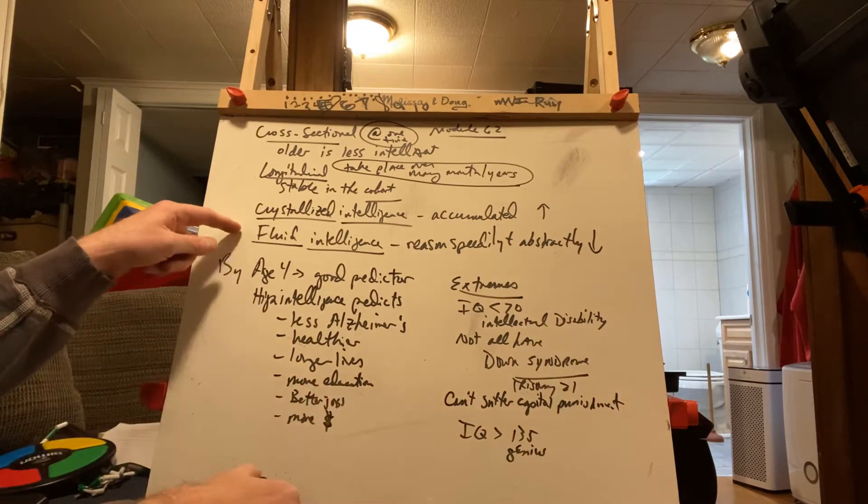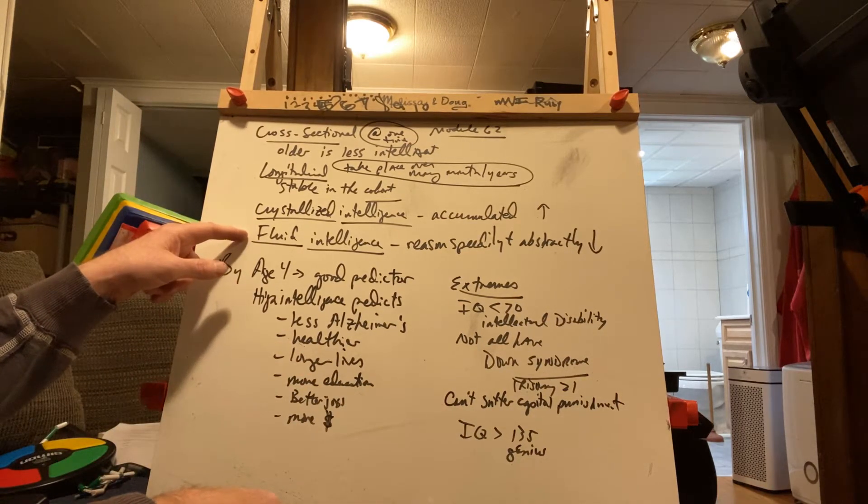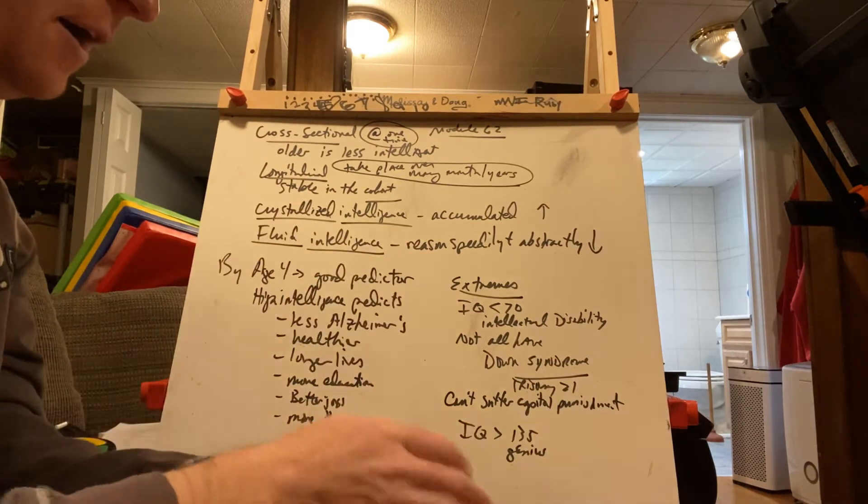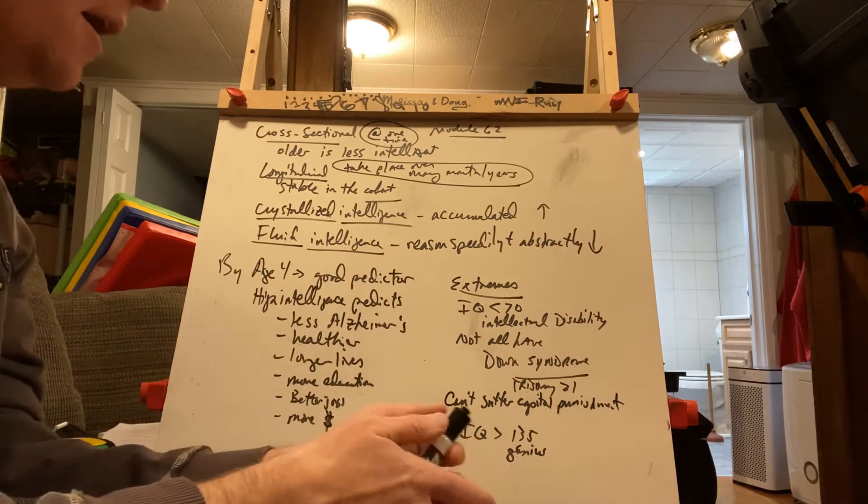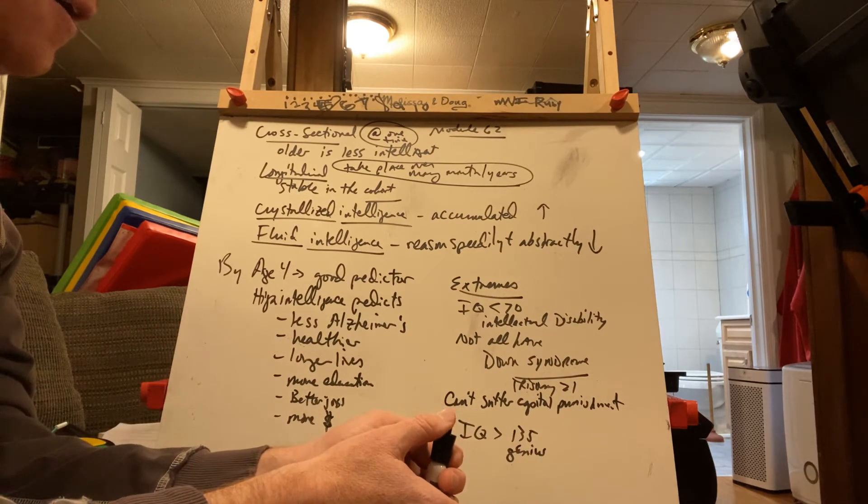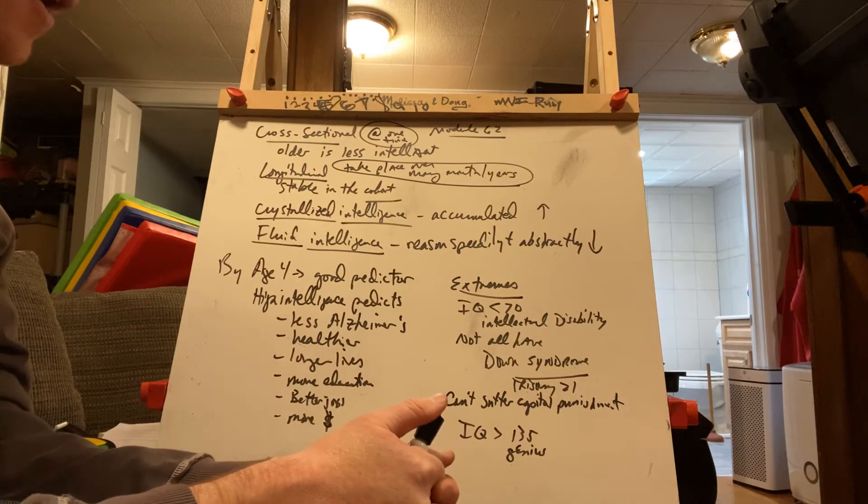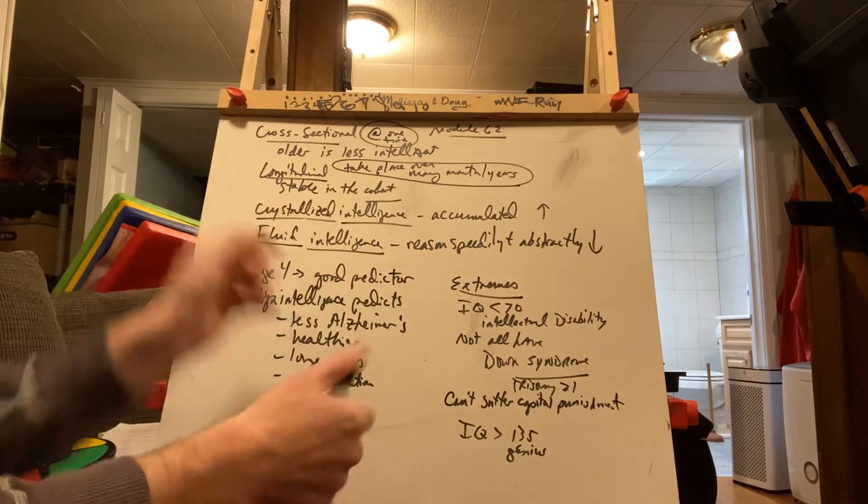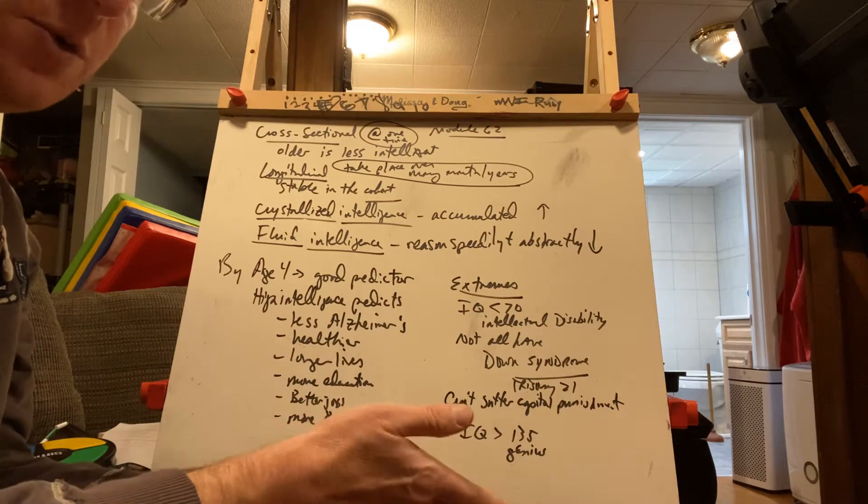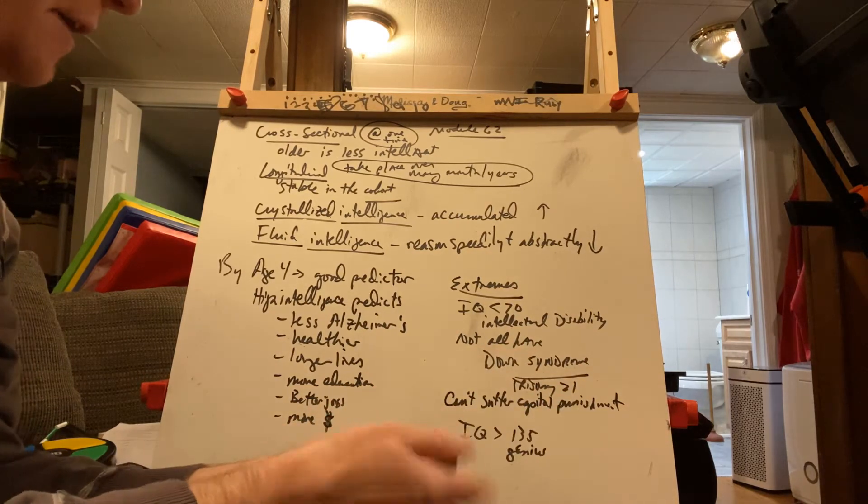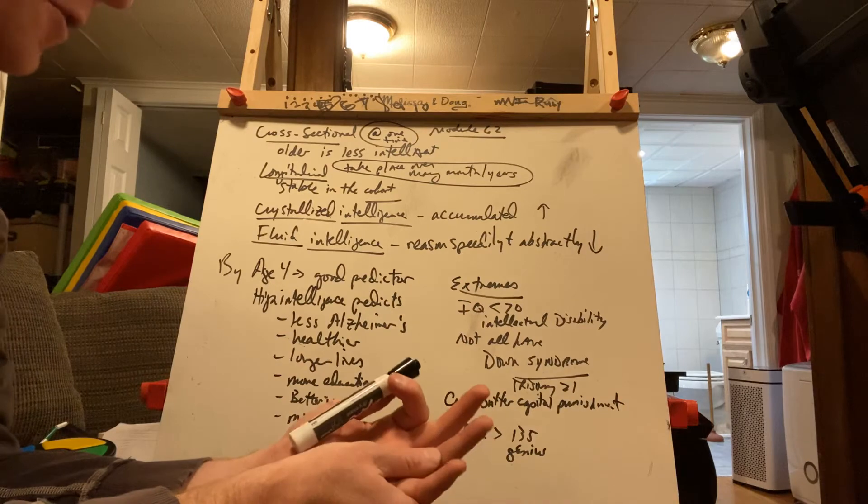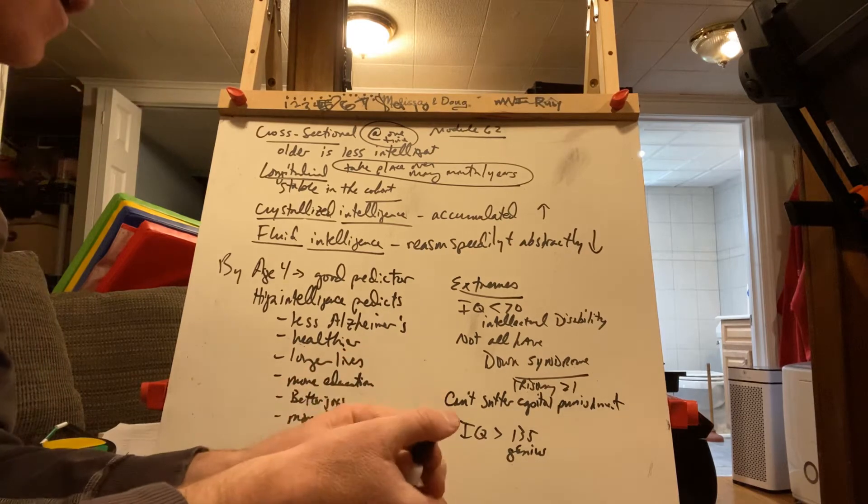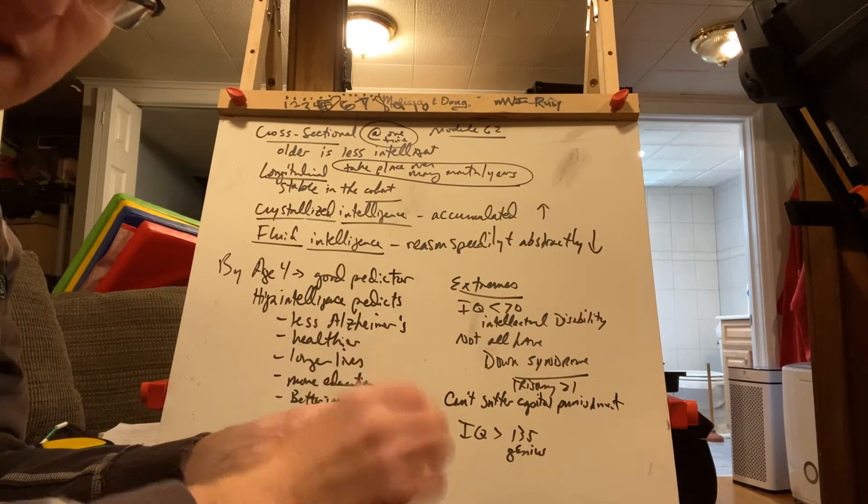And here's where you're better than me - your fluid intelligence. As you get older, this goes down, so your speed at which you reason and the speed at which you abstractly reason goes down as you get older. Crystallized intelligence is increasing as you get older. If you ask me what a word means or if I know some history, I just happen to know more because I am older. But fluid intelligence, you guys have me on that one, because the way that you reason is much faster than mine.